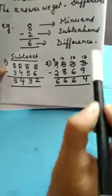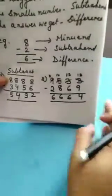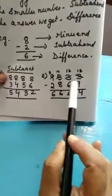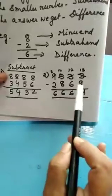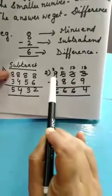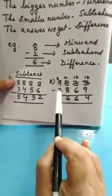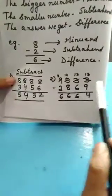Now, one sum we will solve based on borrowing. Okay. 9, 5, 3, 3. 2, 8, 6, 9. That is 9,533 minus 2,869.